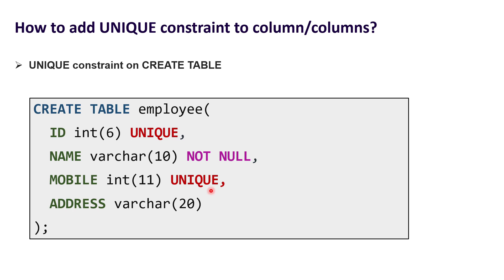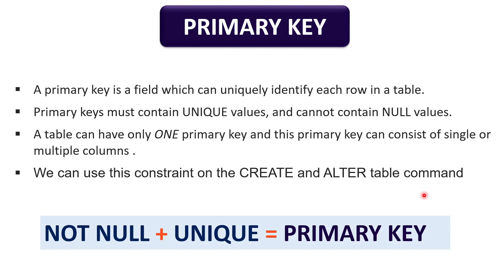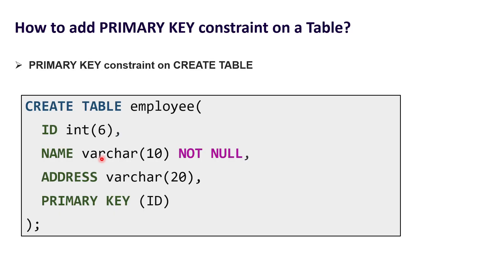Our next constraint is PRIMARY KEY. We use the primary key constraint to specify a column or field of a table as the primary key. With a primary key we can uniquely identify each row or tuple of a table, because only unique values can be stored in a primary key column, and it also cannot store null values. So primary key is a combination of NOT NULL and UNIQUE constraints. One important point: we can have only one primary key per table, but it can be a combination of one or more columns. We can use this constraint with CREATE and ALTER commands.